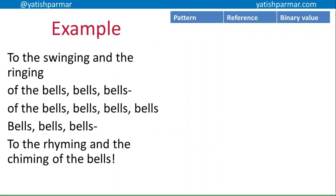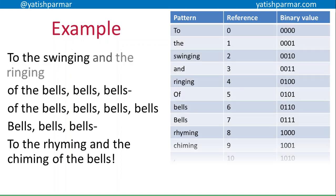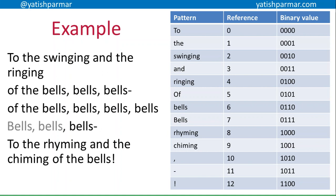Let's use the first technique as an example and see how that works. Basically, I'm going to loop through my passage. As I go through my text, I find all the unique patterns — stored there in the first column of my table. Each of those patterns has a dictionary reference: 'two' is zero, 'swinging' is two, and 'rhyming' is the ninth unique pattern found with a reference of eight. As I've only got 13 unique patterns, I can use a nibble to store each of those references because there aren't that many references in that passage.